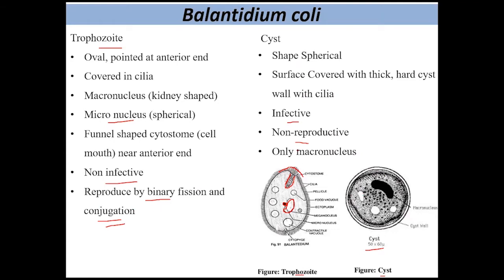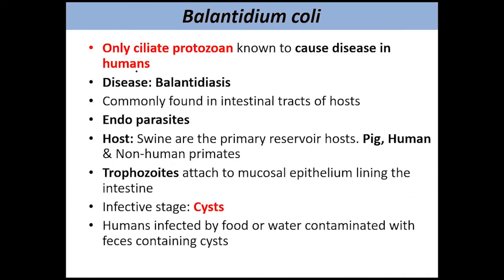The trophozoite can reproduce by binary fission or conjugation, but cysts cannot reproduce. In the cyst stage, they have only the kidney-shaped macronucleus and do not have a micronucleus. This is the morphology of the trophozoite and cyst stages of Balantidium coli.